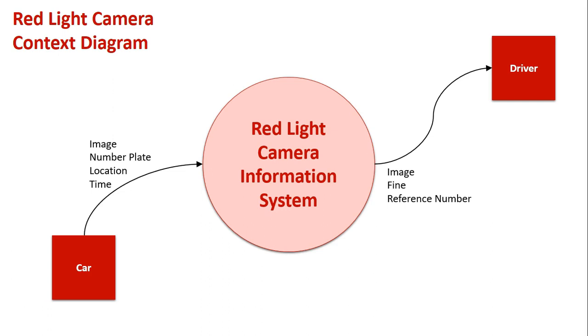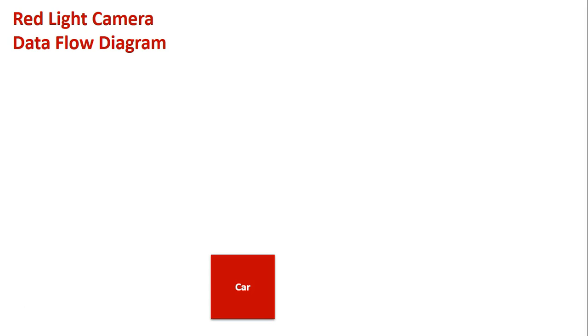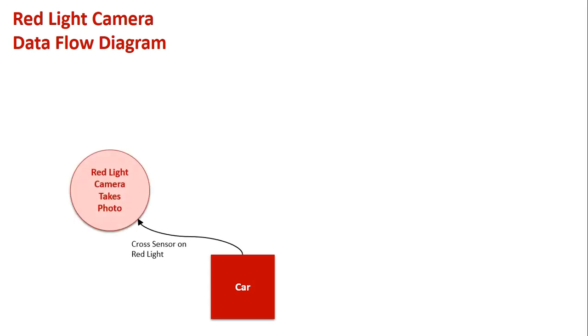This is just an overview of how the system works. We'll now go into our data flow diagram and look at the inner workings of this system. Once again, it all starts with the car — the car goes through the intersection, crosses that sensor light, and the red light camera takes a photo, and that's what gets this system's wheels in motion.